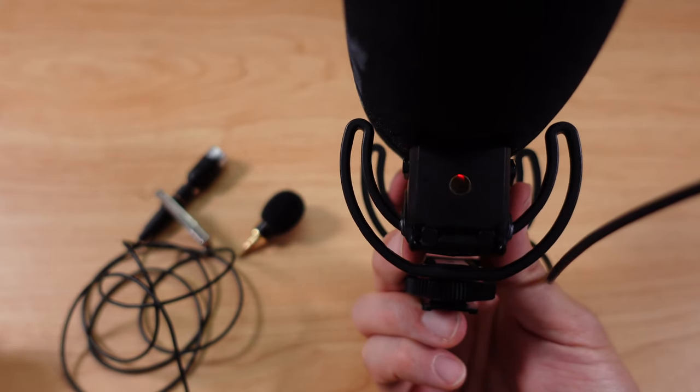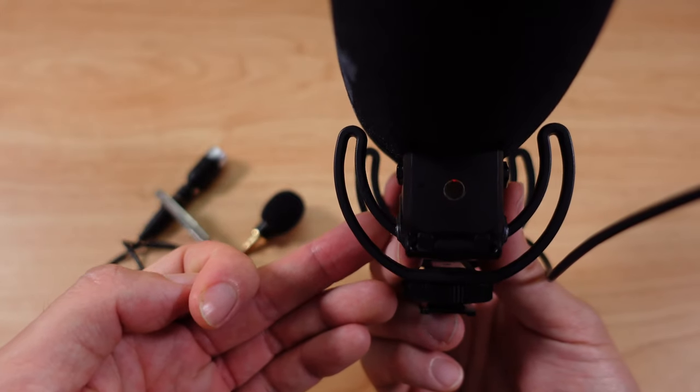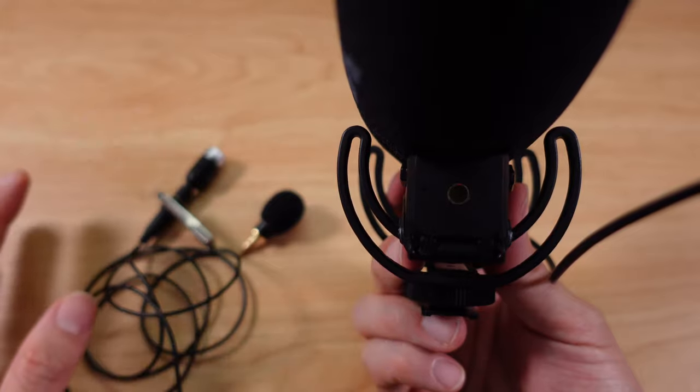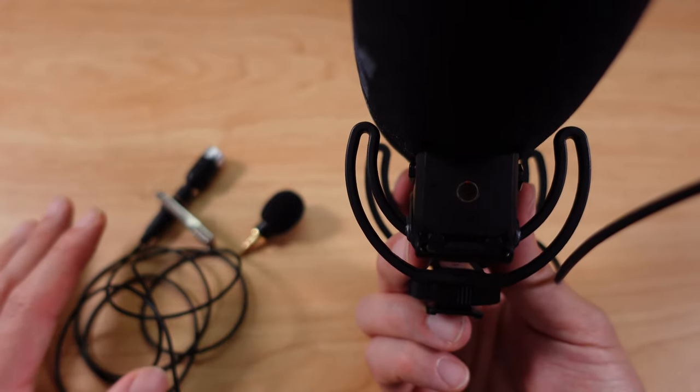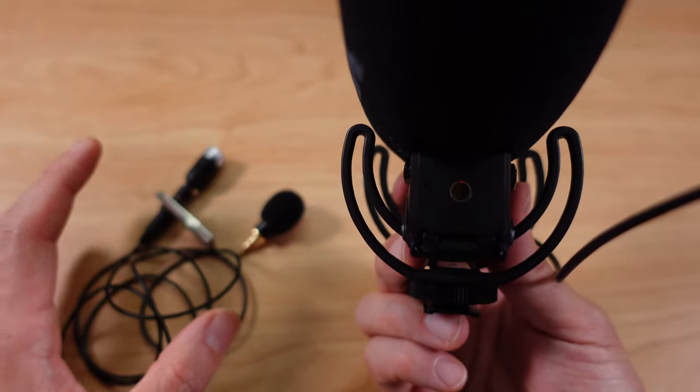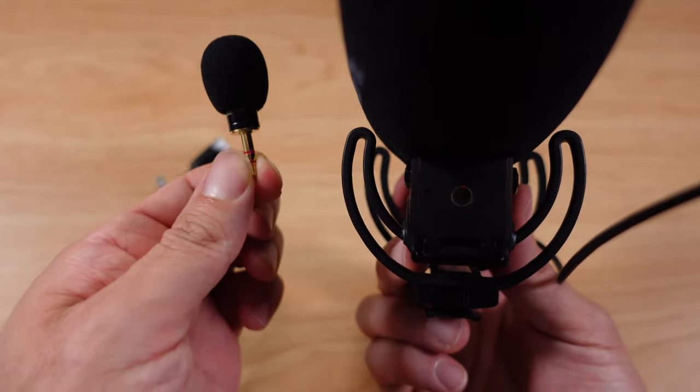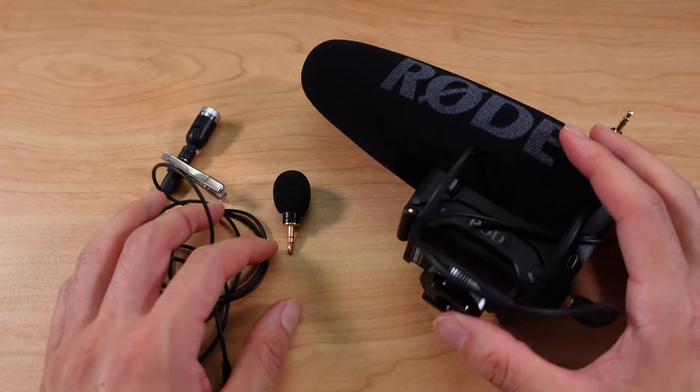This is what it sounds like with the Rode VideoMic Pro Plus. It's significantly more expensive than these two at over $200, maybe it's around $220. Right now it might not be a fair comparison, but I'm just giving you an example of how good the Edutige sounds at $30. That was the microphone test of all three of these mics.